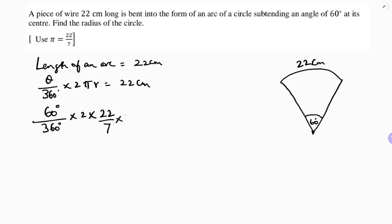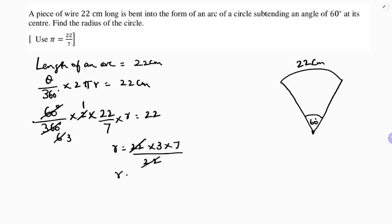Substituting pi as 22 by 7 into radius equals 22. Simplifying: 6 times 1, 2 times 3, and 22 and 22 cancel. So radius equals 22 into 3 into 7 by 22, which gives radius equals 21 centimeters.